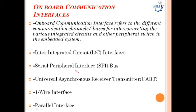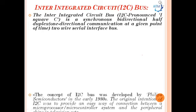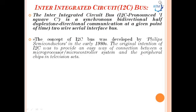The first onboard interface is the I2C (inter-integrated circuit) bus, pronounced I-squared-C. It is a synchronous, bidirectional, half-duplex (one directional at a given point of time) two-wire serial interface bus. The concept of I2C was developed by Philips Semiconductors in the early 1980s, with the original intention of producing an easy way to connect a microprocessor or microcontroller system with peripheral chips in television sets.